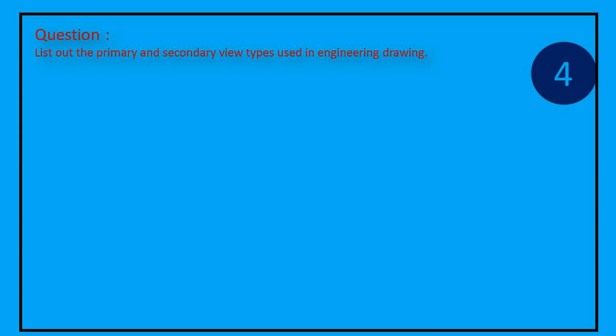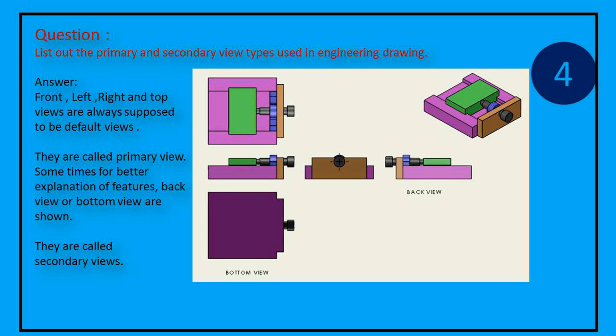Question: List out the primary and secondary view types used in engineering drawing. Answer: Front, left, right and top views are always supposed to be default views. They are called primary view.